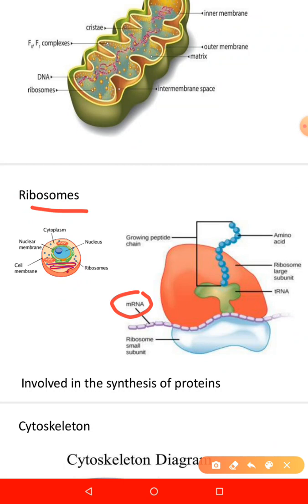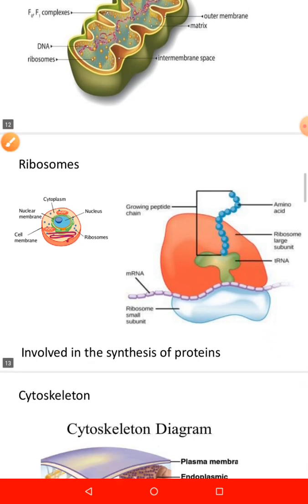lysosomal proteins, and proteins of the cell membrane. Free ribosomes are responsible for synthesis of proteins in hemoglobin, peroxisomes, and the mitochondria. Amino acids are arranged in a particular sequence, forming what we call a protein. For physiology, we are interested in knowing that ribosomes are involved in the synthesis of proteins.